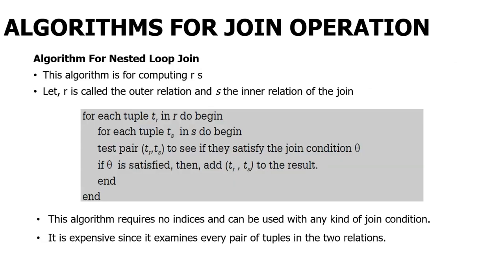The algorithm for nested loop join: there will be two relations — one is table R and the other is table S. Now, the algorithm uses two for loops. The first for loop iterates over the first relation R, and the second for loop iterates over the second relation S. When the join condition is satisfied, we add the tuple; otherwise, we continue. This makes it a nested for loop — hence nested loop join.